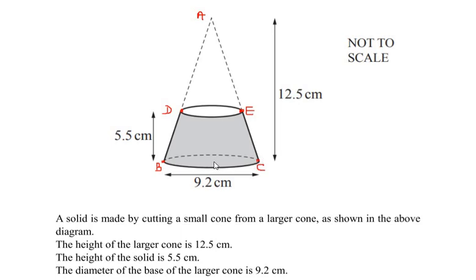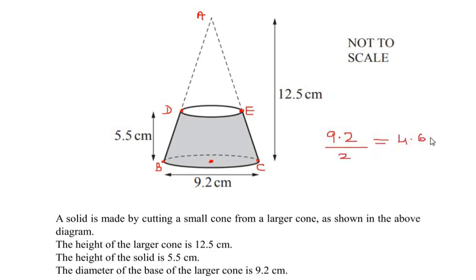Let us start by finding the radius of the larger cone. They have given that the diameter is 9.2 centimeters, so we can find the radius of the bigger cone by dividing 9.2 by 2. That gives us 9.2 ÷ 2 = 4.6 centimeters.